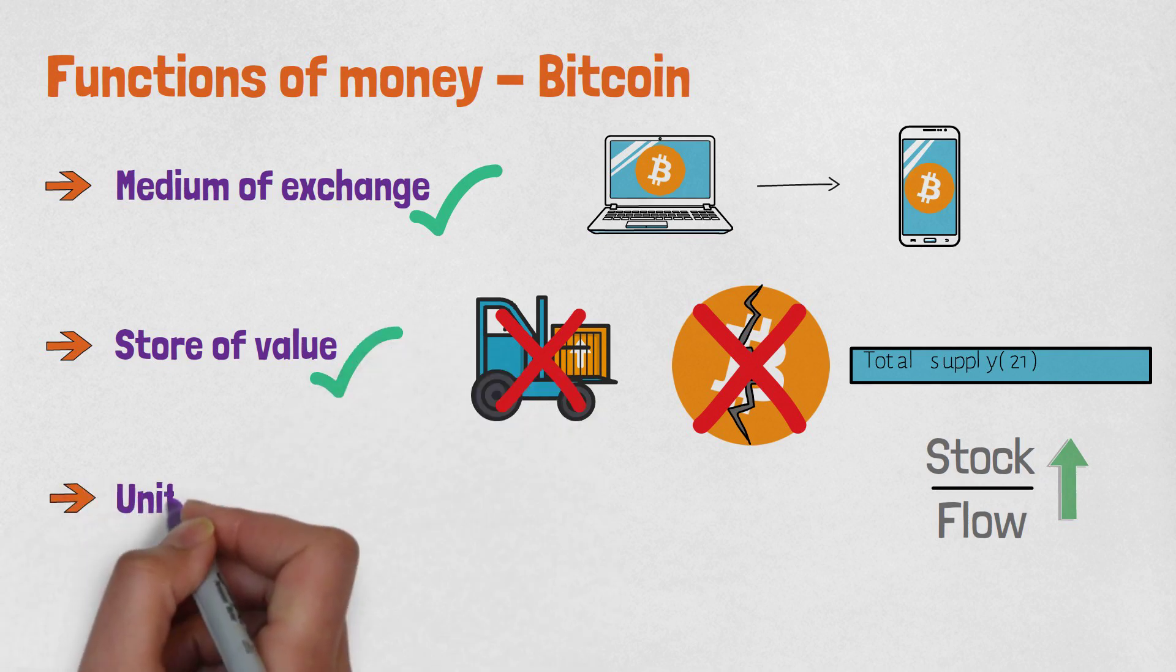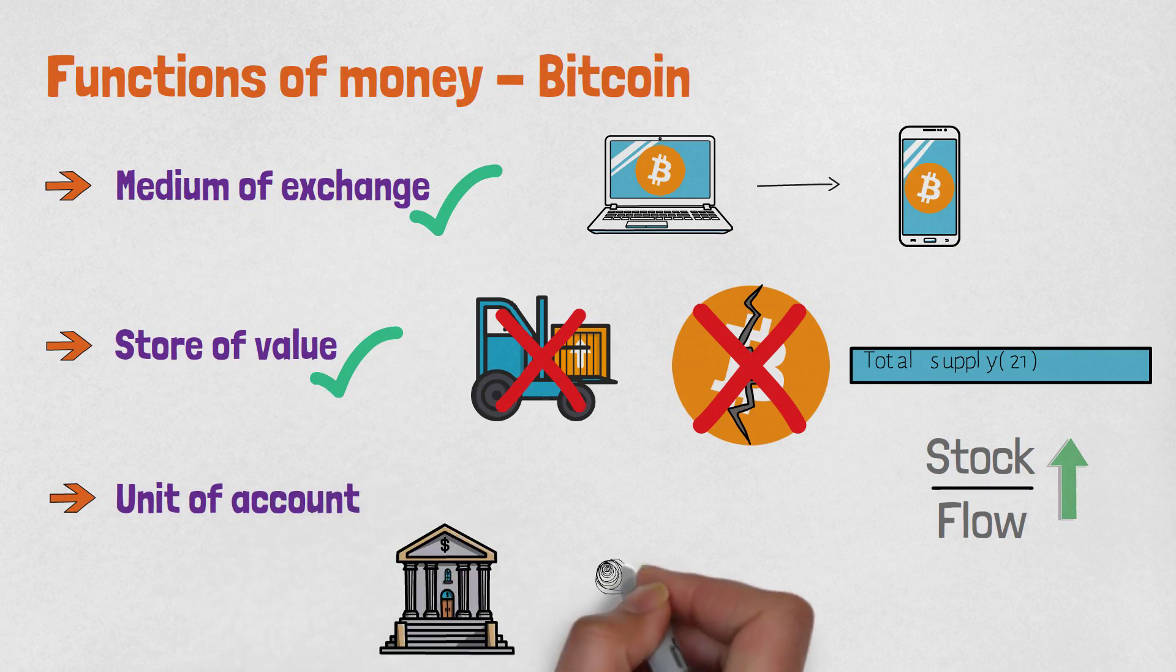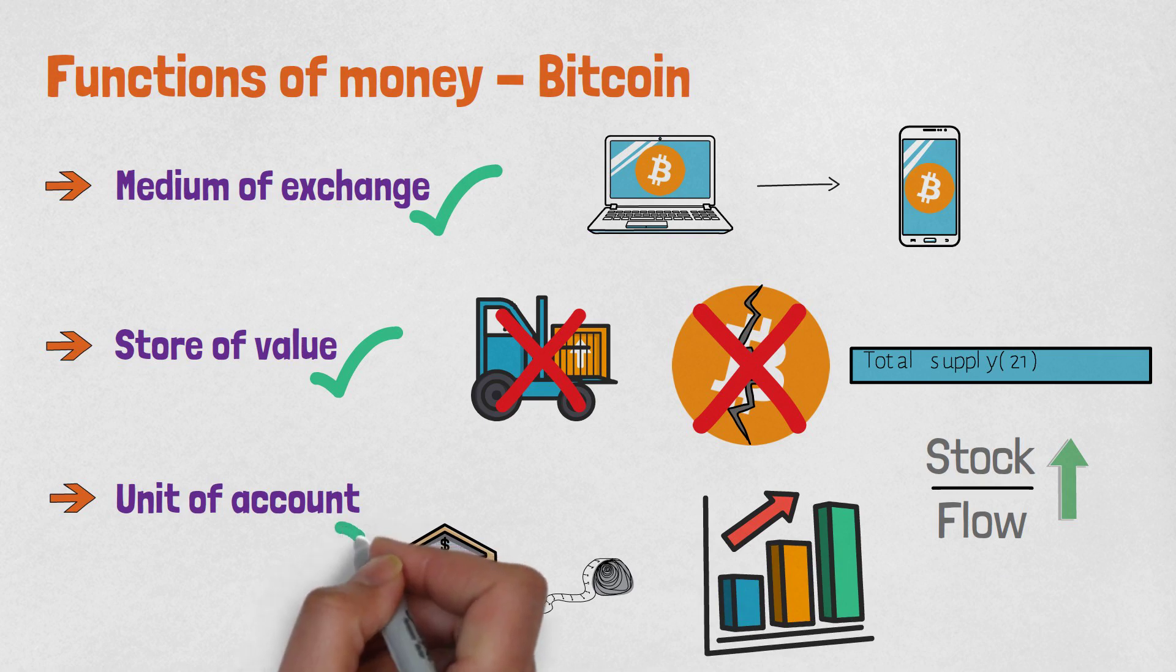Money should also be a unit of account with which all economic activity is measured and planned. While Bitcoin has the potential to be a unit of account, it still needs to be widely recognized and adopted to become one. The fact that the entire monetary policy of Bitcoin has been known since the day it was created goes in its favor. That makes Bitcoin extremely predictable even though its price is currently volatile.